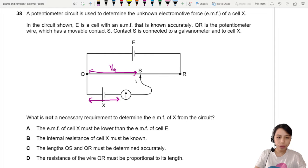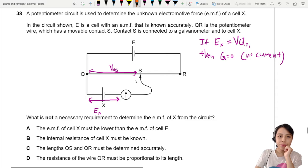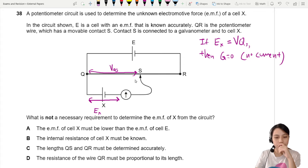Let's call VQS and the EMF of X. So if EMF of X is the same as VQS, then your galvanometer will show no deflection. The galvanometer at zero basically means no current flowing through that small loop down there. This is what we call a balanced potential. So if you want to find this, you need to find this V. Now let's look at the choices.